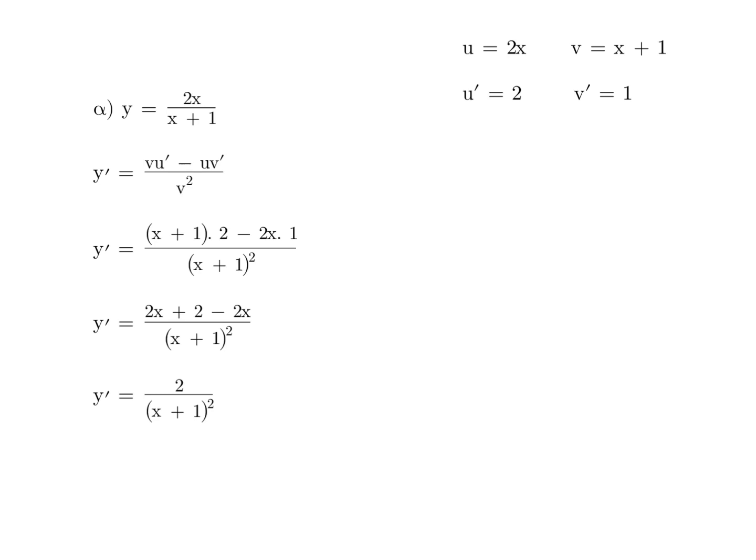If u equals 2x, then u dash equals 2, and if v equals x plus 1, then v dash equals 1. Then we substitute into our formula, vu dash minus uv dash all over v squared. Be careful, if you have two terms such as x plus 1, make sure you put it in brackets so you expand correctly. We get x plus 1 times 2 minus 2x times 1 all over x plus 1 squared. Expanding and simplifying, we end up with 2 over x plus 1 squared.